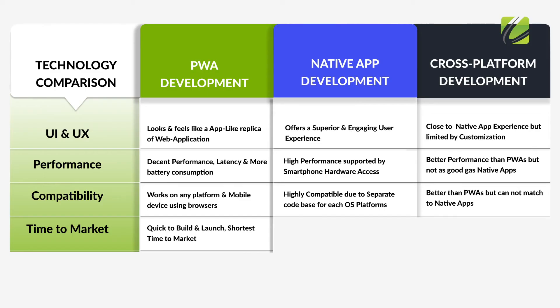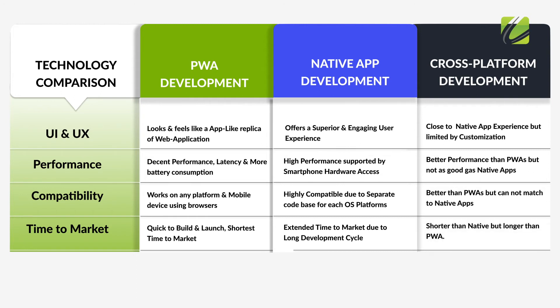Parameter number four is time to market. Apps built with the progressive app development approach are quick to develop and have the fastest time to market. Native app development has a more extended time to market as development has to be done for Android and iOS separately. In the case of cross-platform development, time to market is shorter than native but longer than PWA.